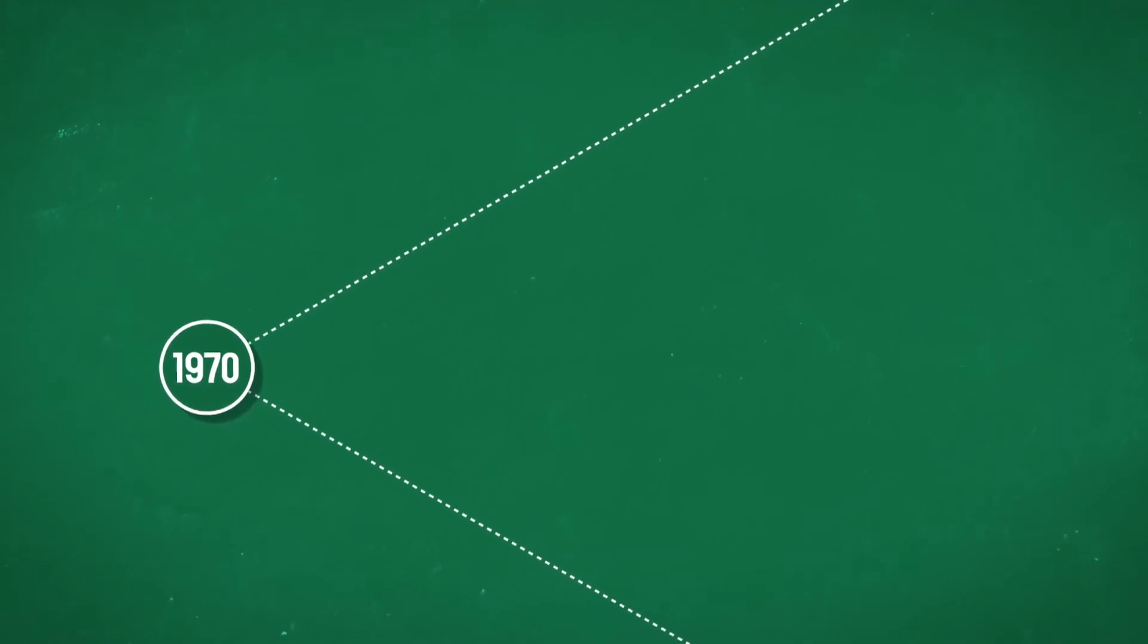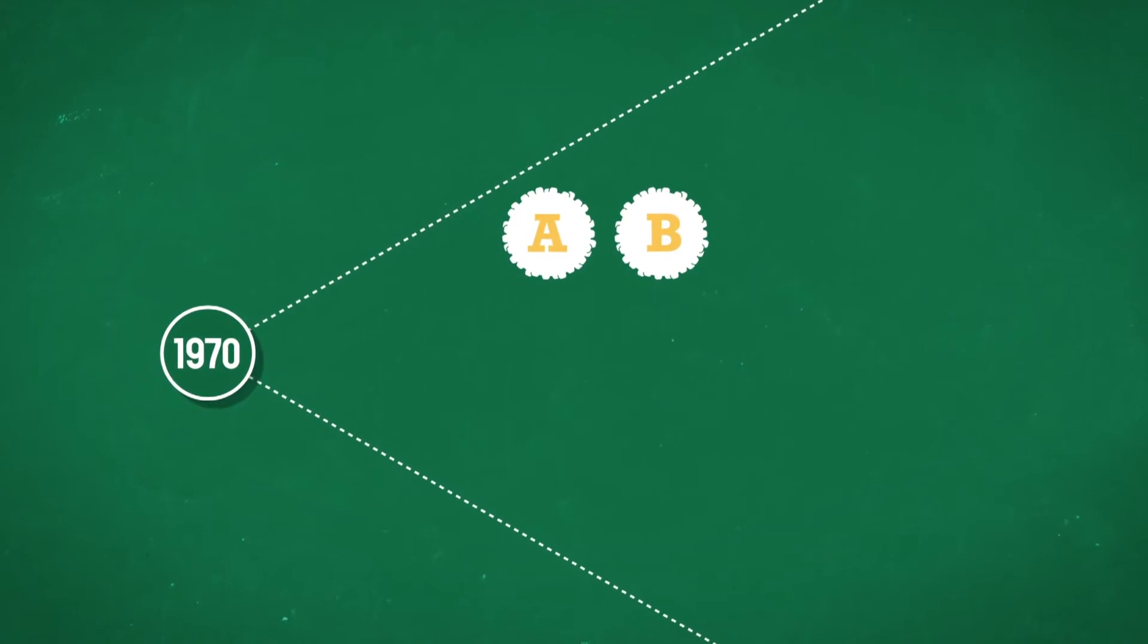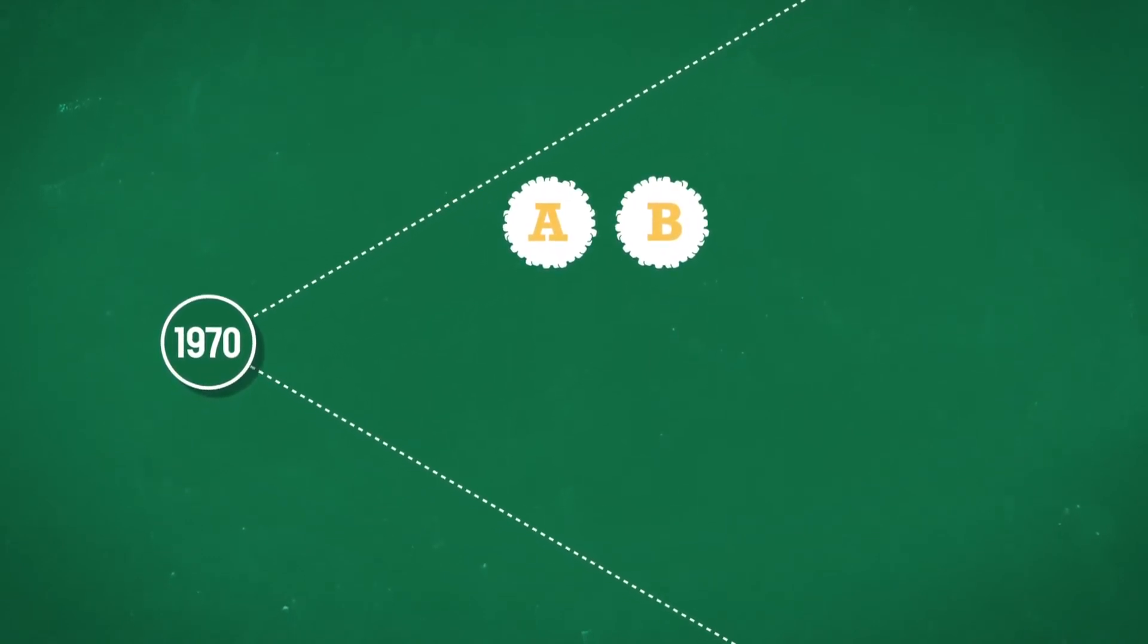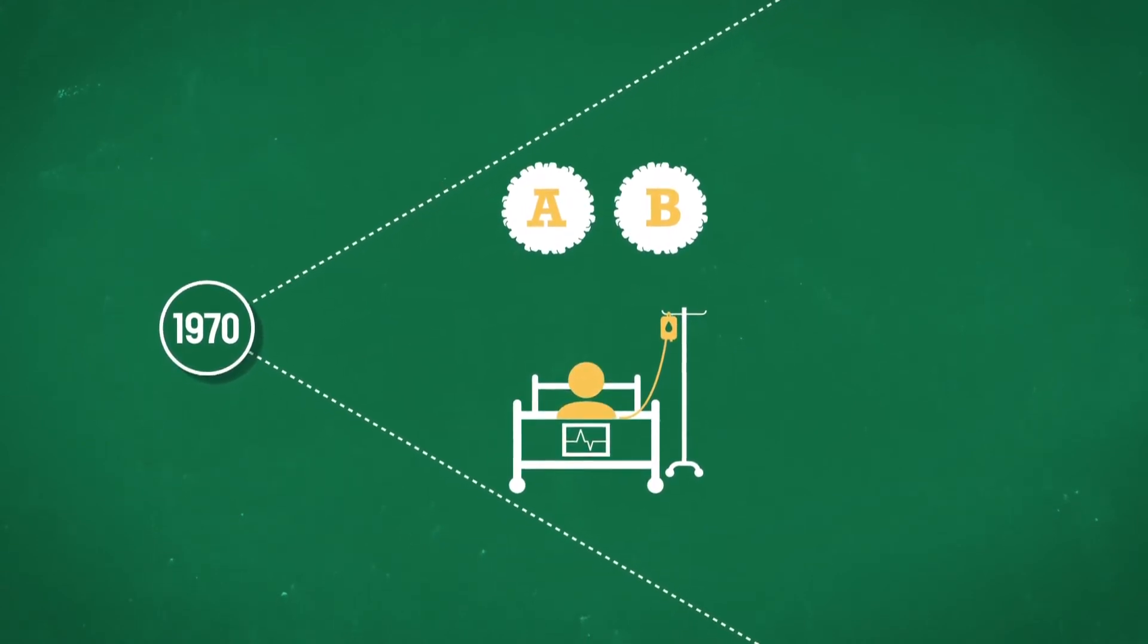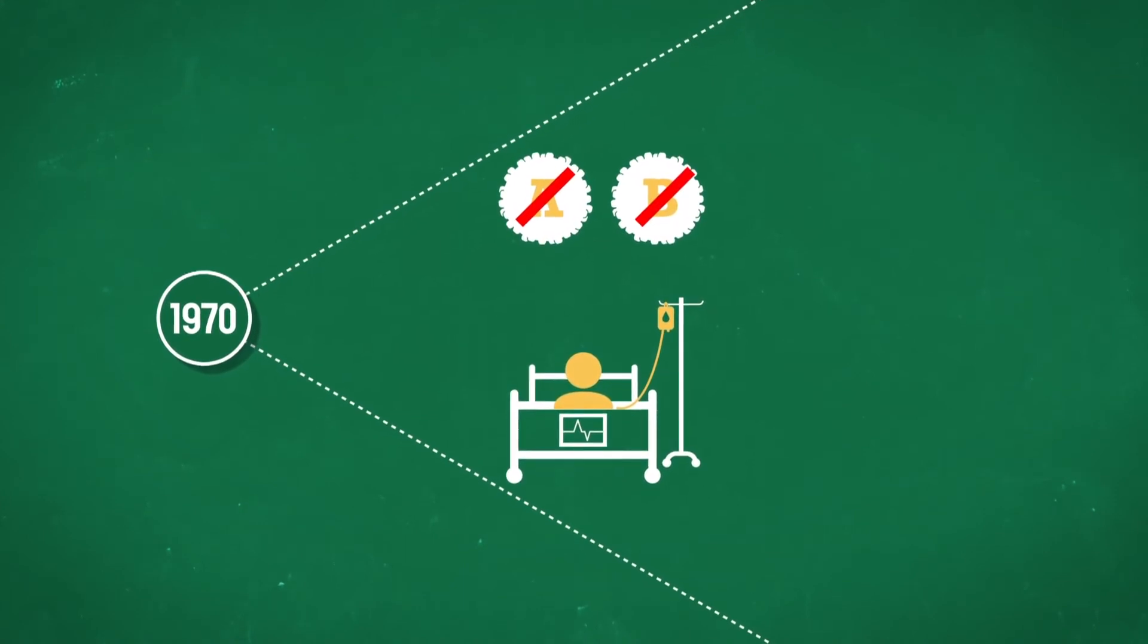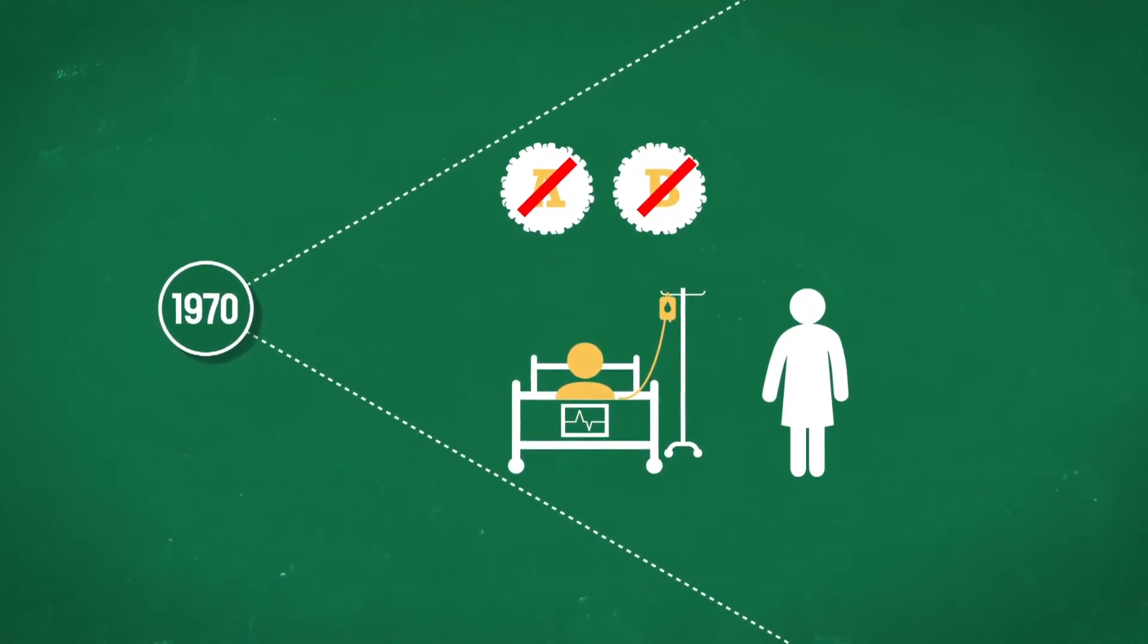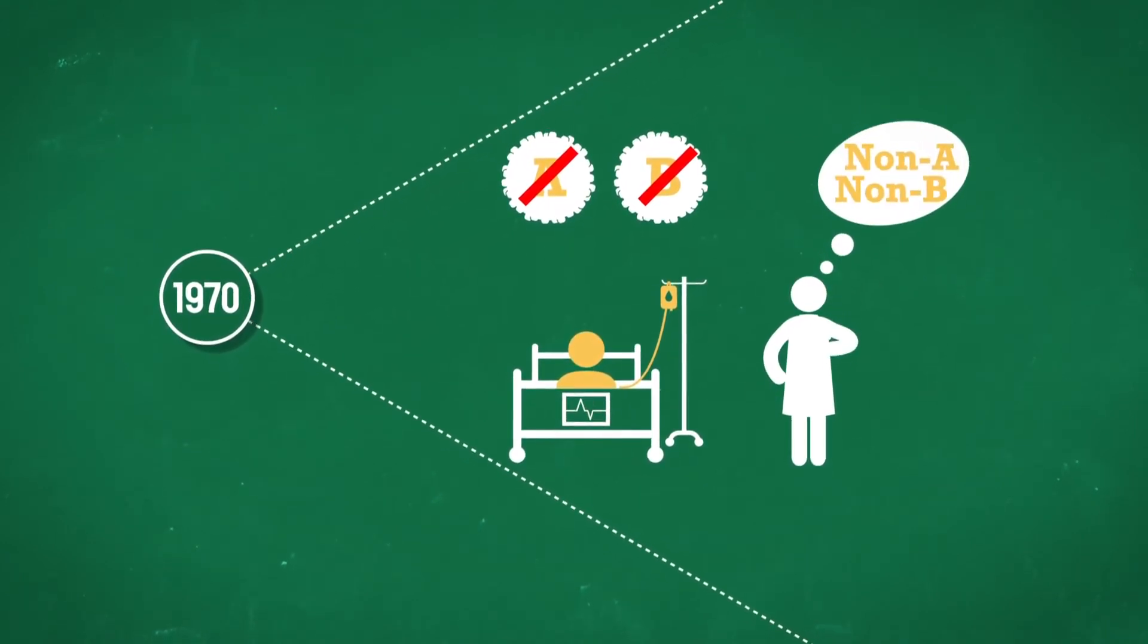At the beginning of the 1970s, the hepatitis A and B viruses were formally identified. Several years later, scientists observed that following blood transfusions, some patients became infected, not with the A or the B virus, but with a new form of hepatitis. With no great attempt at originality, they named the mysterious virus non-A, non-B hepatitis.